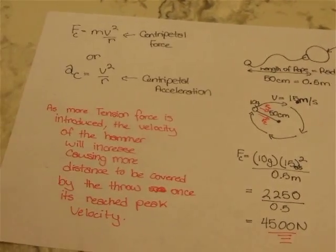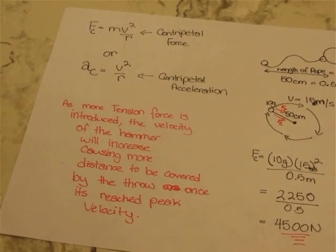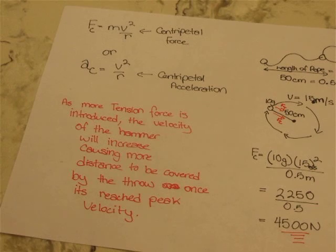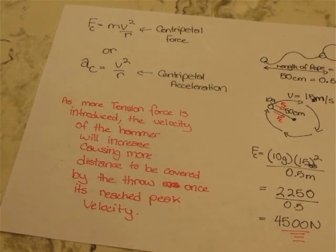As more tension forces are introduced, the velocity of the hammer will increase, causing more distance to be covered by the throw once it has reached peak velocity. Professional hammer throwers only release the hammer as they reach peak velocity, and there is an average of three rotations for most hammer throwers to reach that velocity and launch the ball.